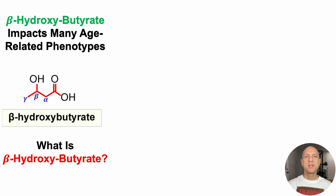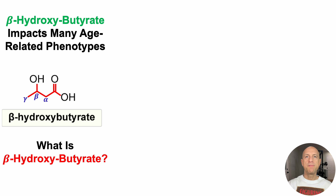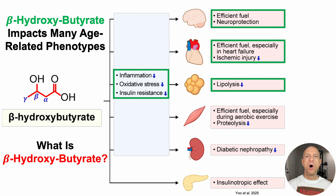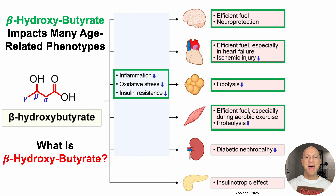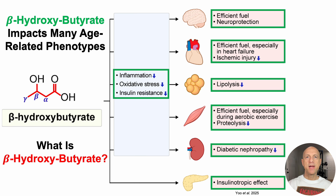Beta-hydroxybutyrate impacts many age-related phenotypes. Beta-hydroxybutyrate has been shown to reduce inflammation, oxidative stress, and insulin resistance, which collectively have been shown to be good for the brain, heart, fat, muscle, kidney, and the pancreas.